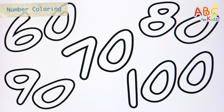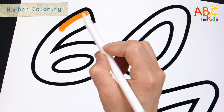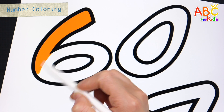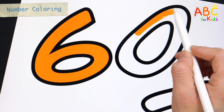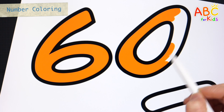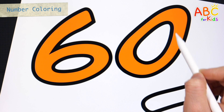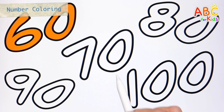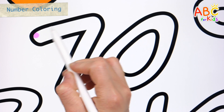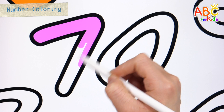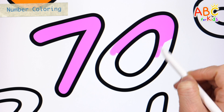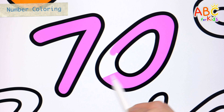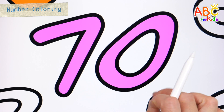Find the numbers and color them. Find 60. That's right! Let's color it! 60. Where is 70? Great job! Let's color it! 70, 80.